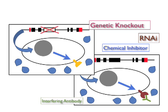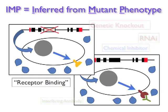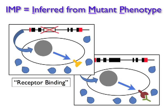an annotation for the function, process, or cellular component of that gene would be said to be inferred from a mutant phenotype, and the evidence code used would be IMP. In this case, mutant is used to designate a general non-normal phenotype rather than necessarily referring to an actual nucleotide mutation.